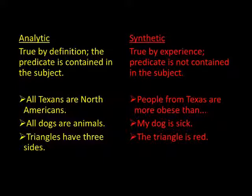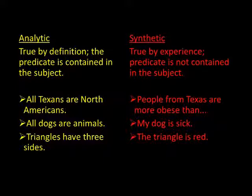Examples of analytic statements: 'All Texans are North Americans,' 'All dogs are animals,' 'Triangles have three sides.' North America is in the definition of Texan; 'animal' is in the definition or concept of dog; and 'three sides' is in the concept of triangle. Analytic statements are not really truths about the world — they're truths about words. 'The bachelor is unmarried' is true because of the meaning of bachelor. So analytic propositions are what David Hume called mere relations of ideas — they're about our words.